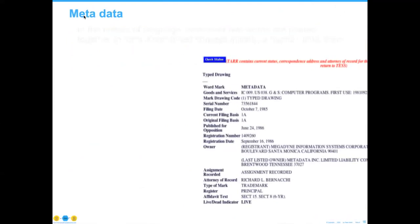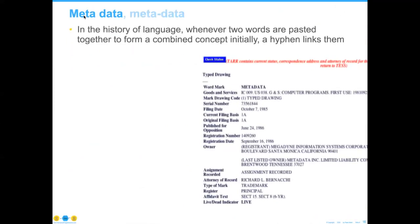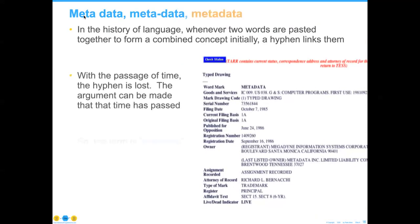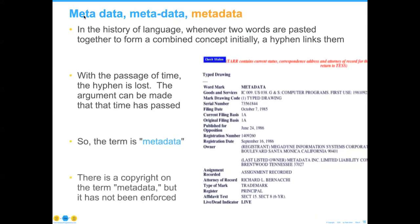Interestingly, people use the word incorrectly. When two words are pasted together to form a combined concept, initially we put a hyphen between them. So we started out with 'meta data,' then went to 'meta-data.' The hyphen has been lost, and we can now make the argument that the word is 'metadata.' It's even spelled wrong in our DIMBOK. There was at one time an individual who had patented the word metadata, but it's not being enforced at this point. So our term is metadata — no hyphen, no space.